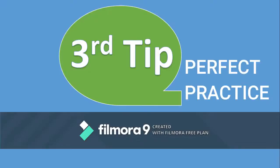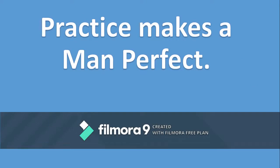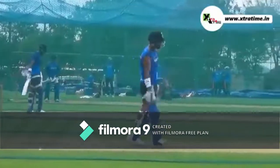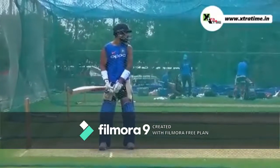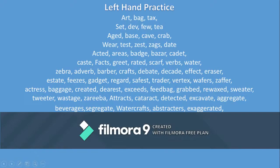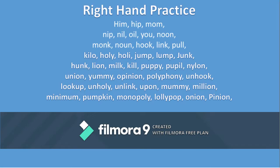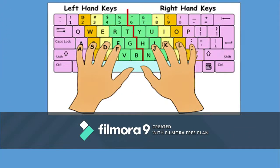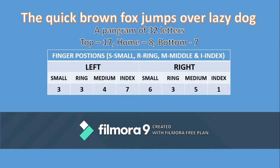The third tip is Perfect Practice. Practice makes a man perfect, but only when done properly. Practice the left hand letters, then the right hand, then both together. The sentence 'The quick brown fox jumps over the lazy dog' contains all 26 letters of the alphabet. The top row has 17 letters, the home row has 8 letters, and the bottom row has 7 letters, showing the distribution of finger use.